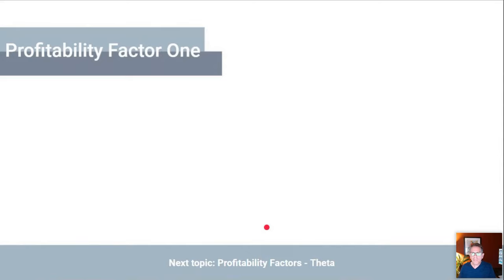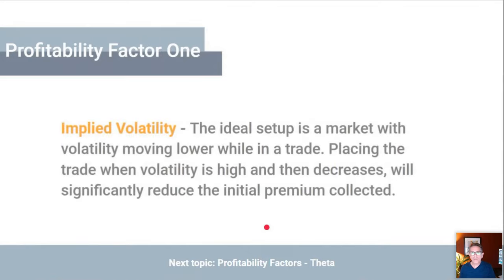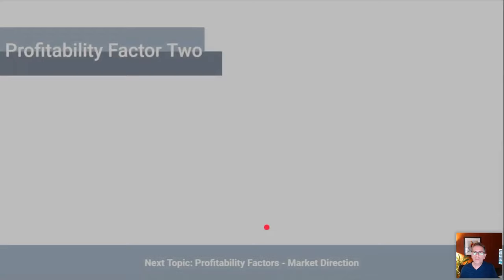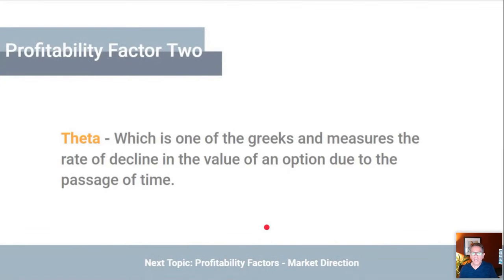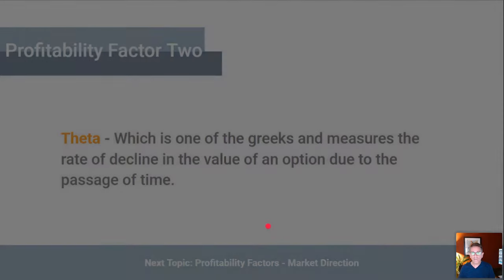Let's talk about the profitability factors in options. First: implied volatility. The ideal setup is when implied volatility is high and goes down — premium prices go down, so you want to initiate the trade when volatility is higher. Number two is theta, which is the rate of decay — it's part of the Greeks in options. Theta is the rate of decline in the value of the option due to the passage of time.